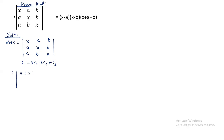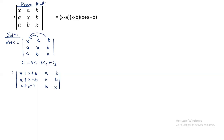After this operation, the first column entries all become x plus a plus b: the first entry is x plus a plus b, the second is a plus x plus b, and the third is a plus b plus x. The second and third columns remain the same.